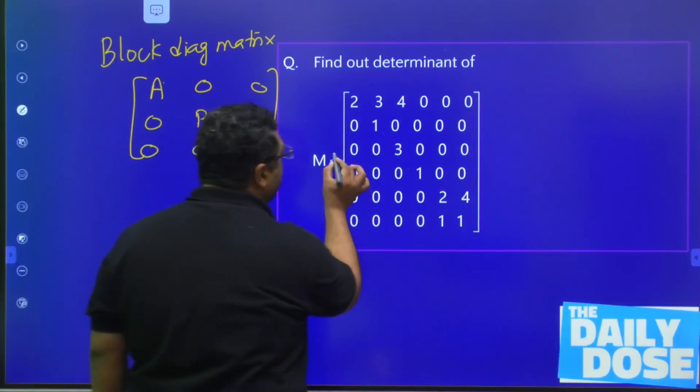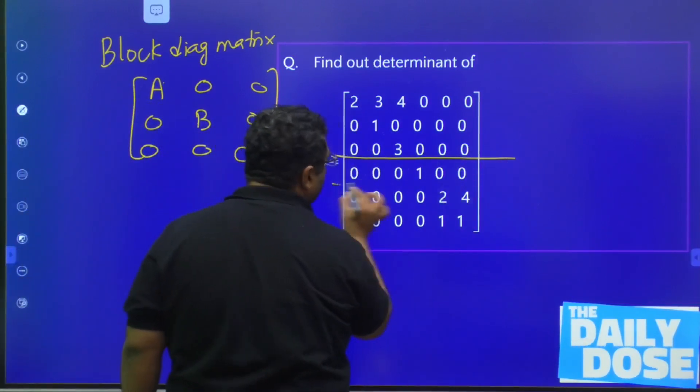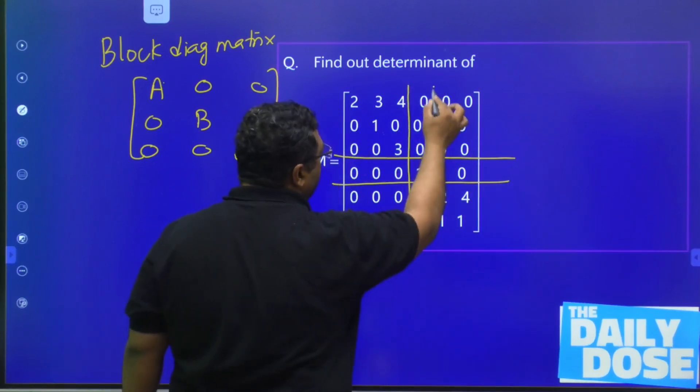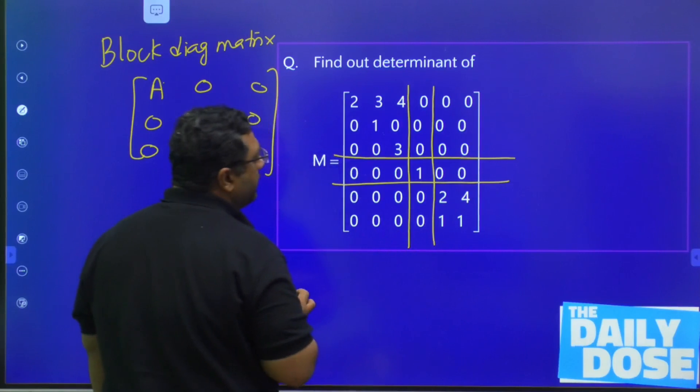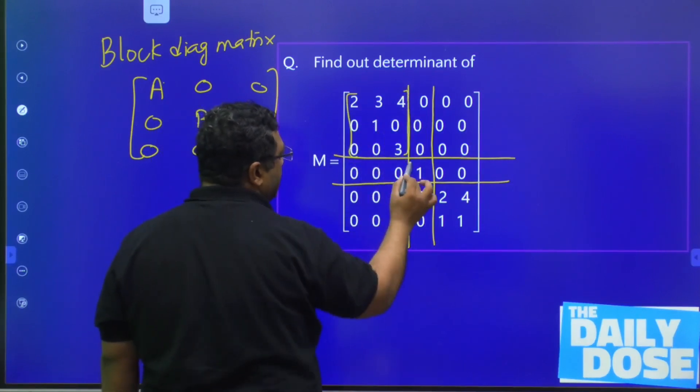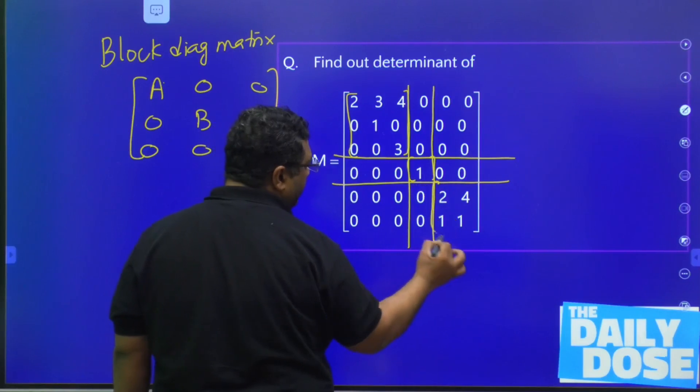Like here, if you will see, if I am going to divide it in this way, then you can feel it. You can have a feel of it—that this is going to be one matrix, this is going to be second matrix, and this is going to be third matrix.